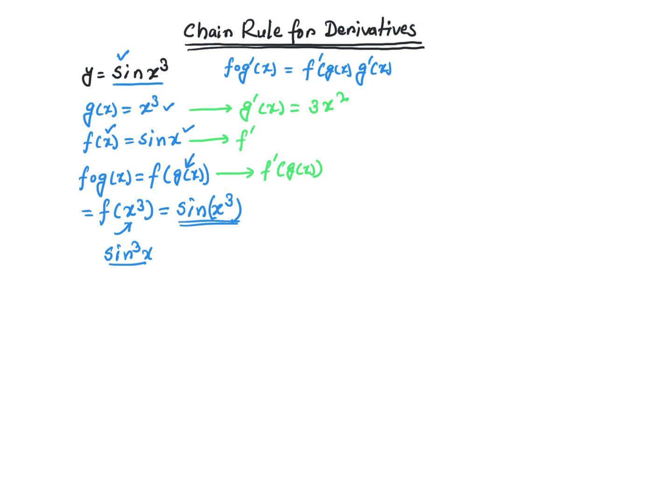You're going to write f prime of x, the derivative of sine of x, right? Derivative of sine of x, which is very easy, is cosine of x. So you have input x and you are taking derivative with respect to x.